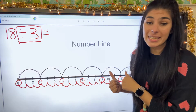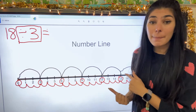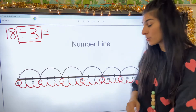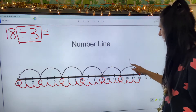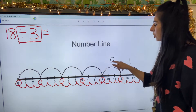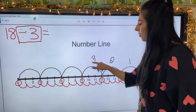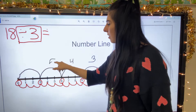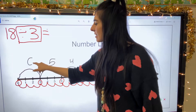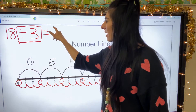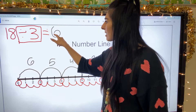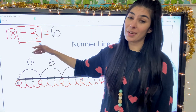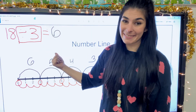Now I just need to count up how many big jumps I did and that's going to be my quotient. So I did one, two, three, four, five, six. So my quotient is six, making 18 divided by three equals six.